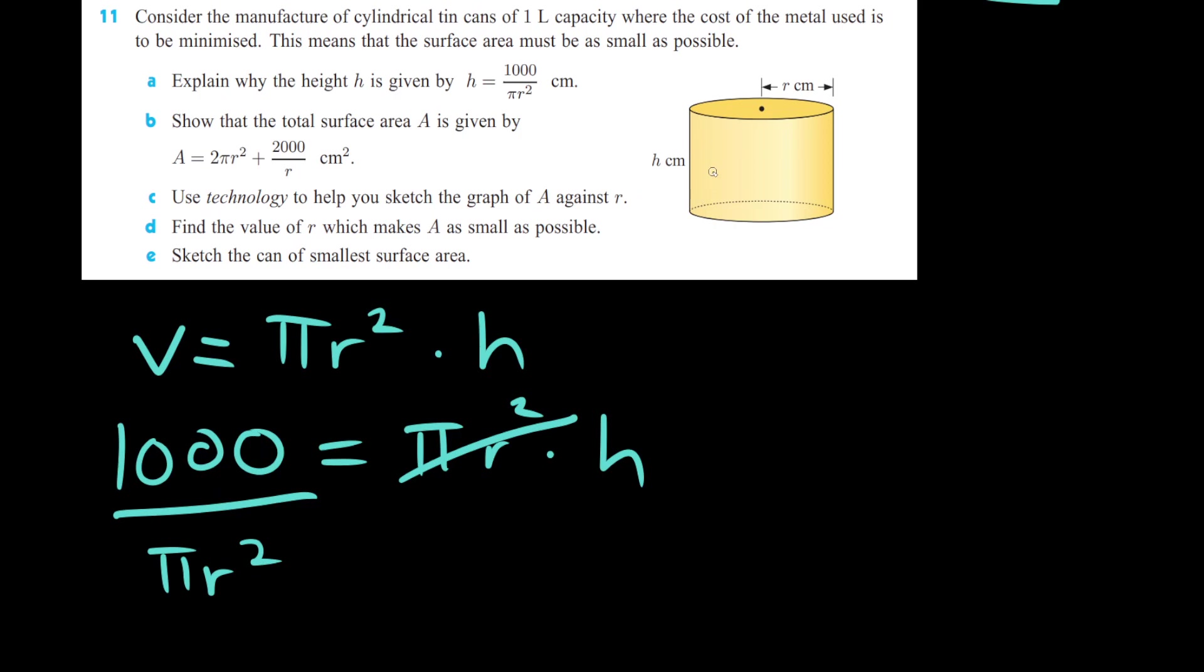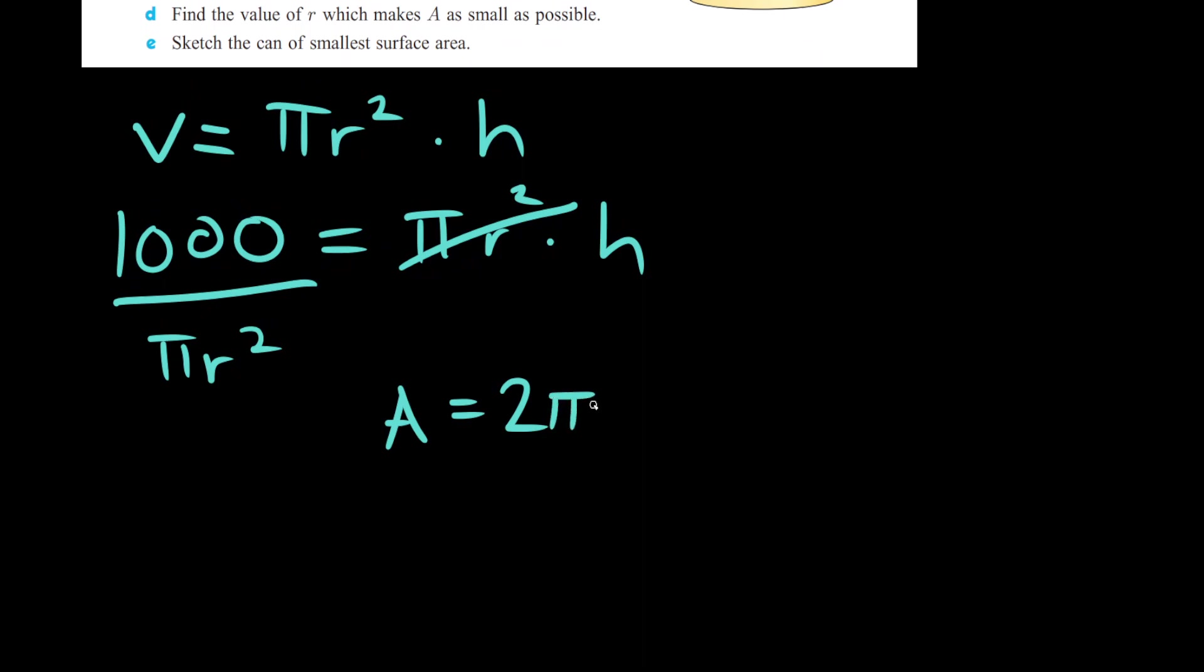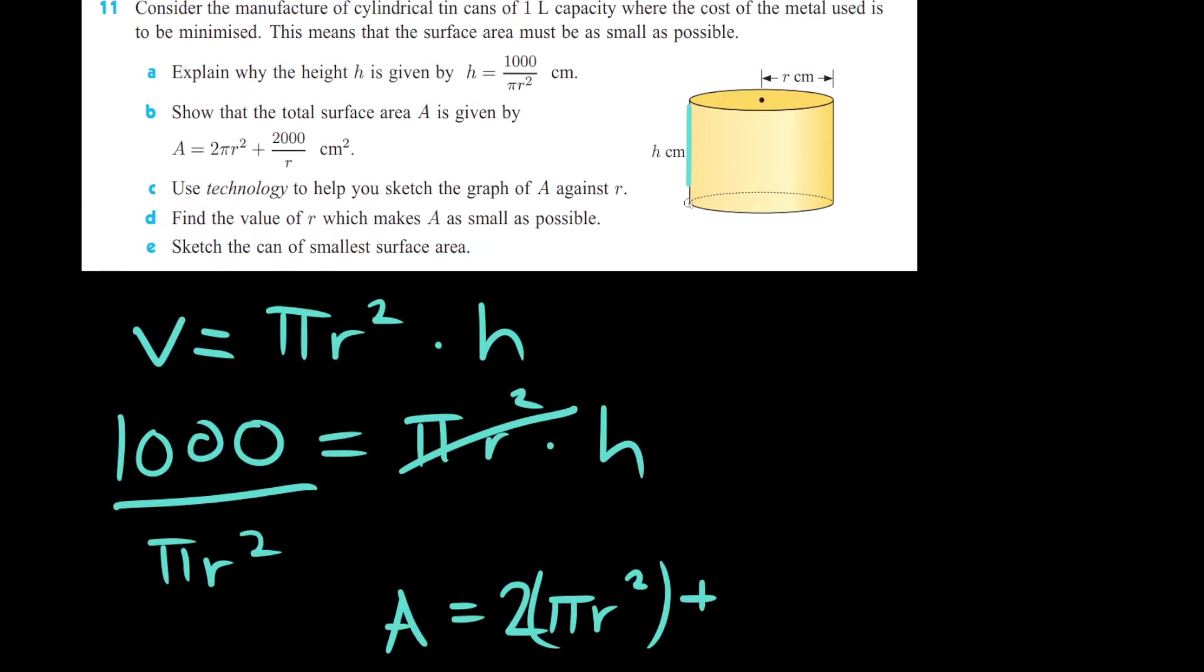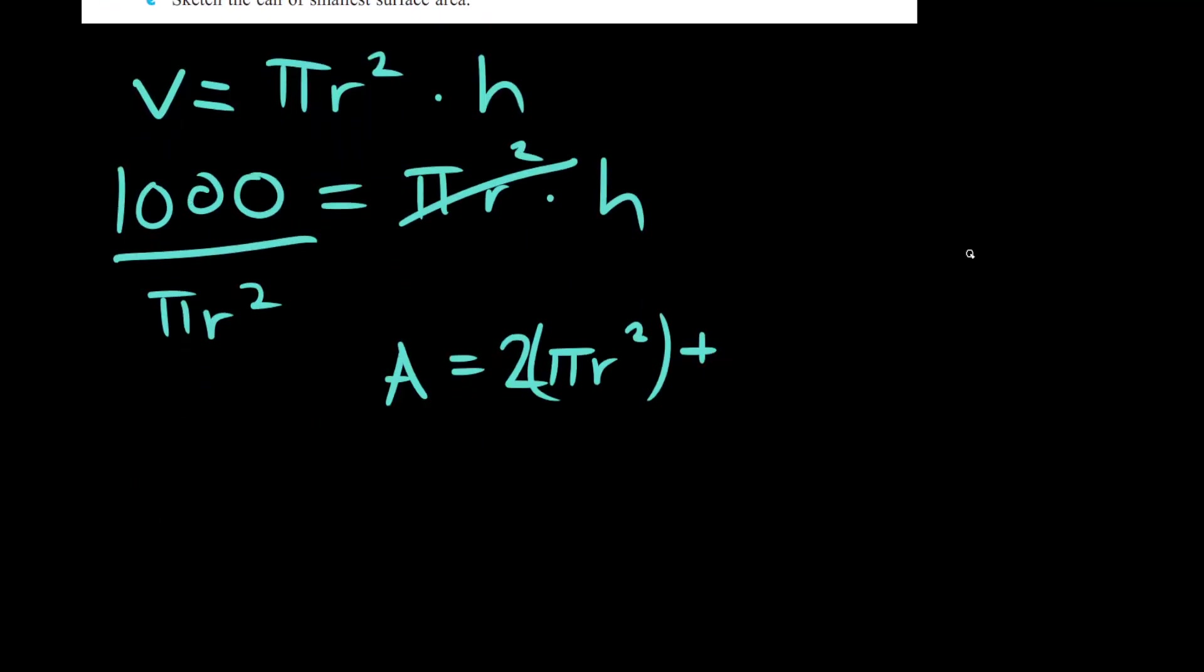Now we have to show the surface area A is given by the equation there. So what parts of this cylinder do we have? We have a circle at the top, a circle at the bottom to make up two circles. So we'll get that A is equal to 2 times pi r squared plus this outside band can be represented by the circumference of the circle multiplied by the height upwards. And the circumference of a circle is 2 pi r. We're going to write that 2 pi r times 1,000 over pi r squared.